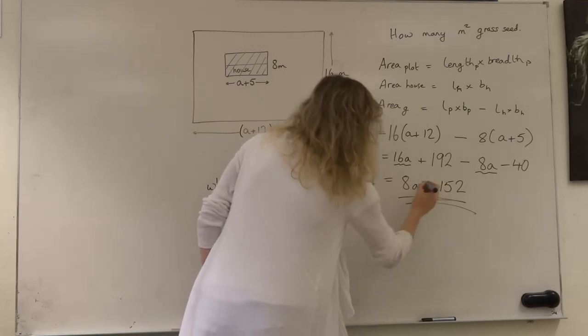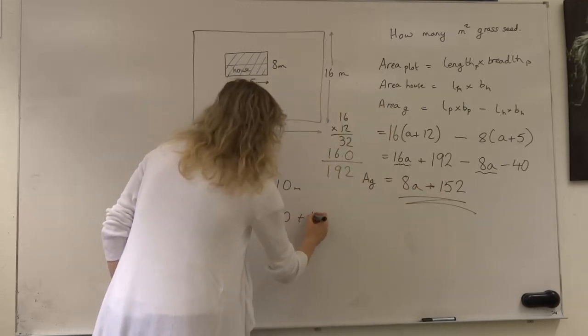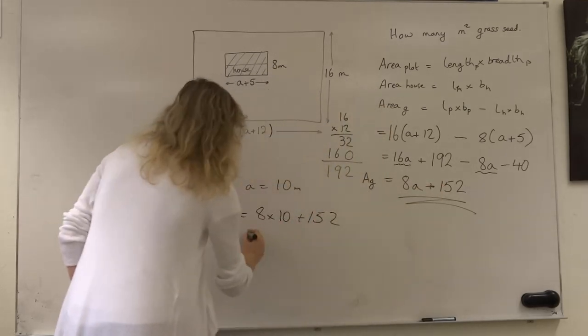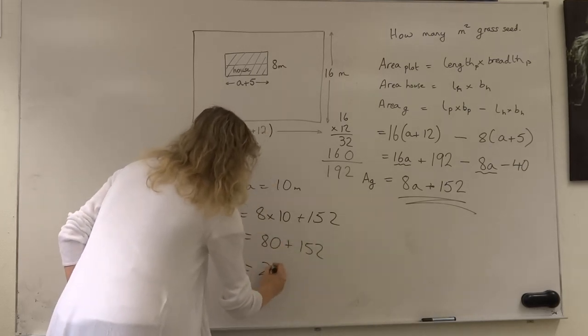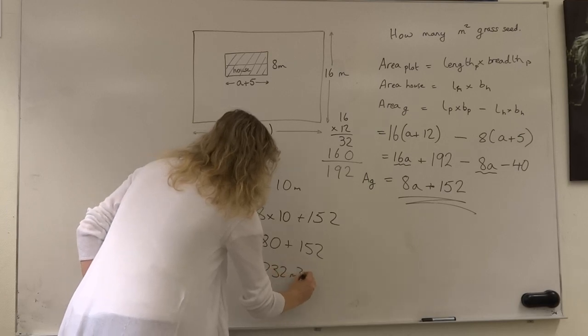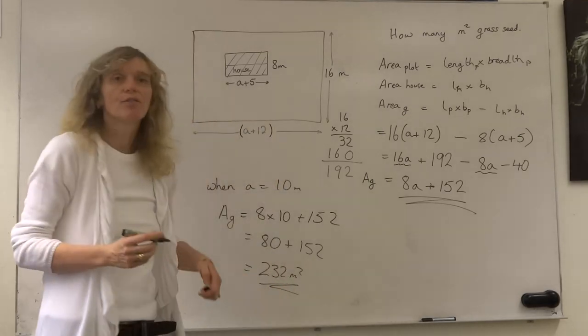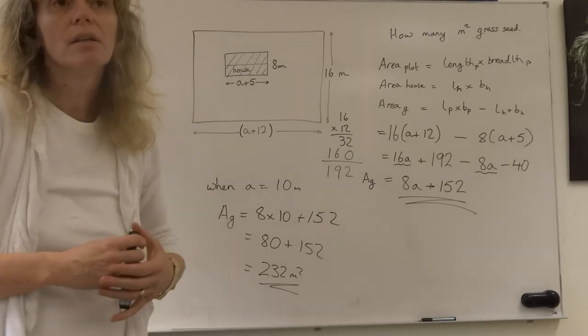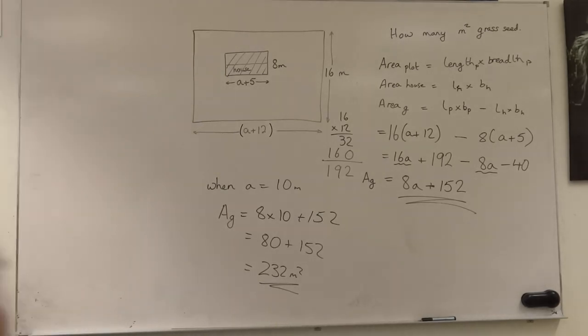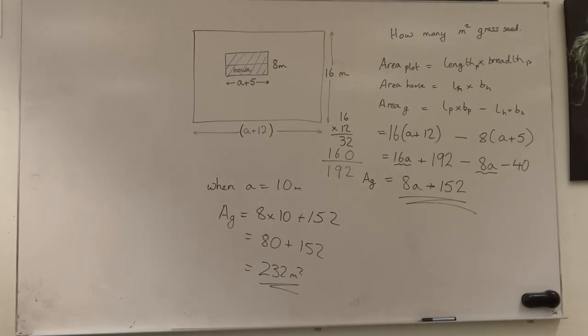So we get equals 80 plus 152, giving us 232 meters squared. So the grass seed that we would need to buy to cover our garden fully with grass would be 232 square meters of grass seed. We look on the pack and see how much...